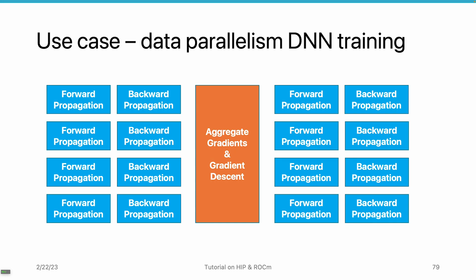Let's look at the use case of data parallelism in deep neural network training. Forward and backward propagation are independent from GPU to GPU — the GPUs do not need to communicate during those phases. But at the end, we need to aggregate data by calculating the element-wise average of the gradients, perform gradient descent, and update the model using gradients from all GPUs to create a new parameter set.